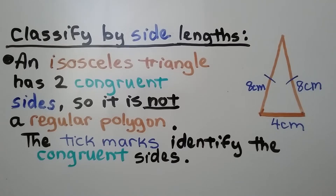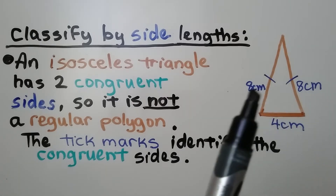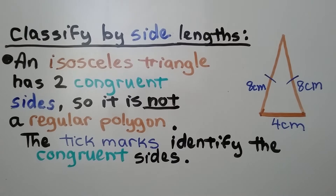Again, classifying by side lengths: an isosceles triangle has two congruent sides, so it's not a regular polygon. It doesn't have the same side lengths or the same angle measures — it's only got two sides that are the same. The little tick marks identify the congruent sides.